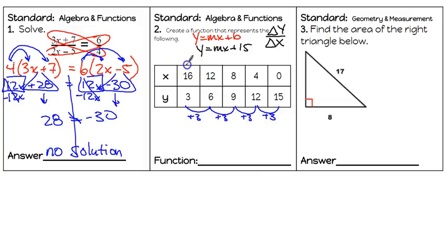Going to the X values: 16 to 12 we're subtracting 4, 12 to 8 subtracting 4, 8 to 4 subtracting 4, and 4 to 0 subtracting 4. So our slope M equals our change in Y, which is positive 3, over our change in X, which is negative 4. Our function is Y equals 3 over negative 4 X plus 15.